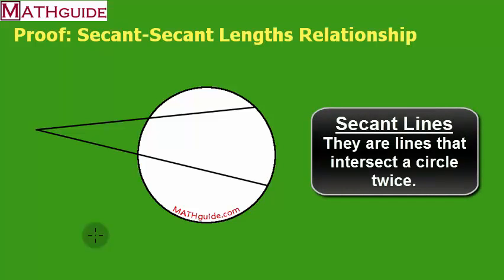Remember, a secant line is a line that intersects the circle twice. You can see that this line intersects the circle here and here, and this other secant line intersects the circle here and here.